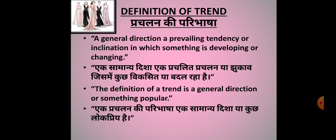Definition of Trend (प्रचलन की परिभाषा): A general direction, a prevailing tendency and inclination in which something is developing and changing. एक सामान्य दिशा, एक प्रचलित प्रचलन या झुकाव जिसमें कुछ विकसित या बदल रहा है। The definition of a trend is a general direction or something popular. एक प्रचलन की परिभाषा: एक सामान्य दिशा या कुछ लोकप्रिया है।